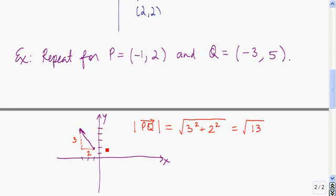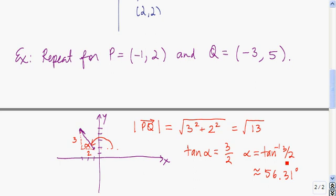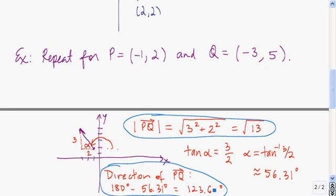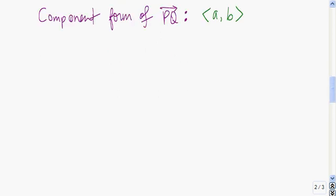To find the direction of the vector, it's measured counterclockwise from the horizontal, so we're looking for the angle from the positive x-axis. First, we find angle alpha, where the side opposite alpha is 3 and the side adjacent is 2, so the tangent of alpha is 3/2. Alpha equals the inverse tangent of 3/2, which is about 56.31 degrees. Since we want the angle measured counterclockwise from the horizontal, we subtract from 180, giving a direction of about 123.69 degrees. The magnitude is √13.